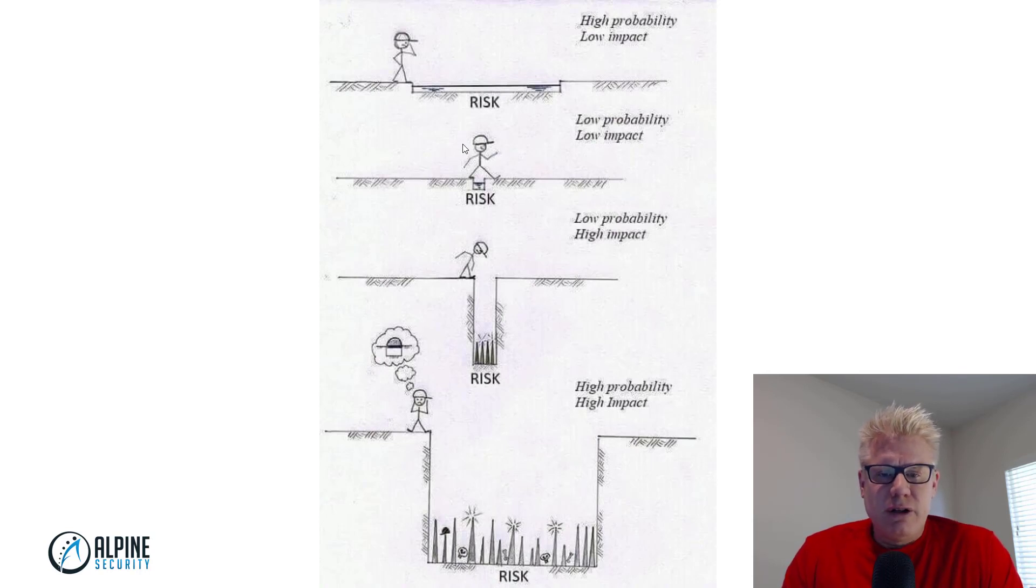Second scenario, the guy's walking along. There is a hole. It is not very long and it is not very deep. So there's a low probability this person will fall in the hole because they could probably step over it. And even if they do fall in the hole, it's a low impact because the hole is not very deep.